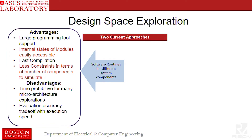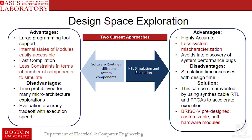There are advantages and disadvantages to both. On the software simulation side, the advantages include easy access to internal states of modules and faster compilation time. However, the disadvantage is that you trade accuracy for speed. On the hardware emulation side, you've made up that accuracy, but you've traded off in terms of design time and simulation time. Our solution is circumvented by designing a synthesizable RTL and using FPGAs to accelerate execution, and we present BRIST-5.